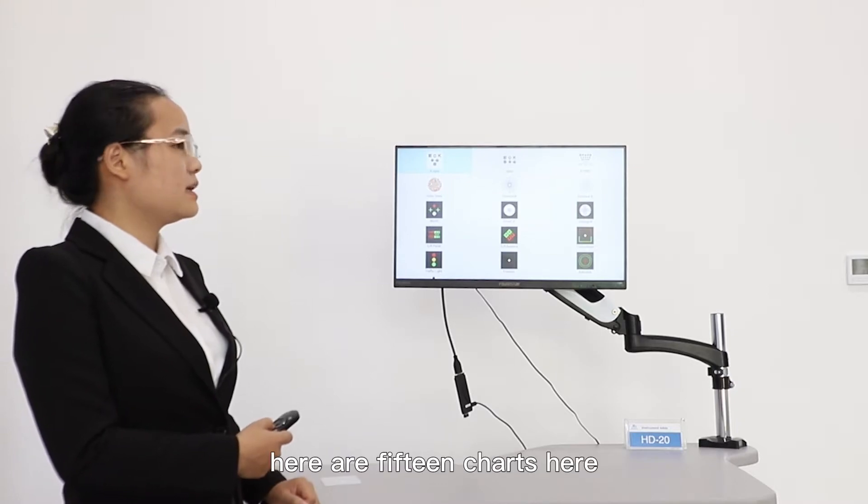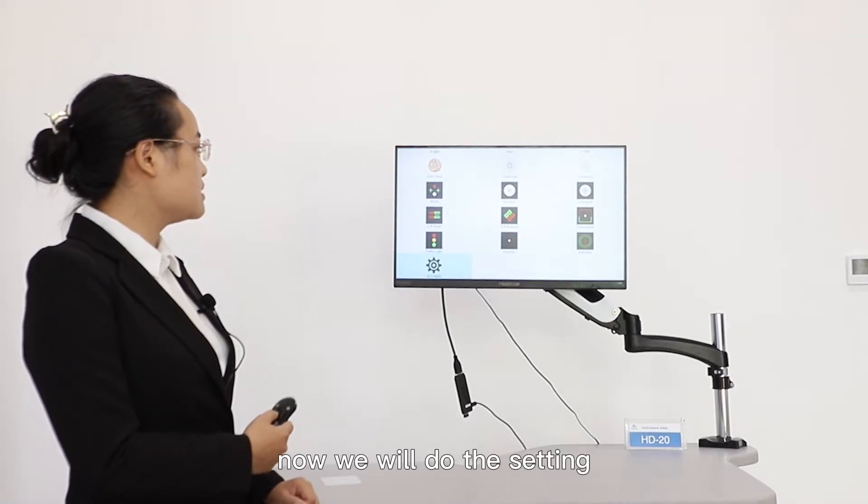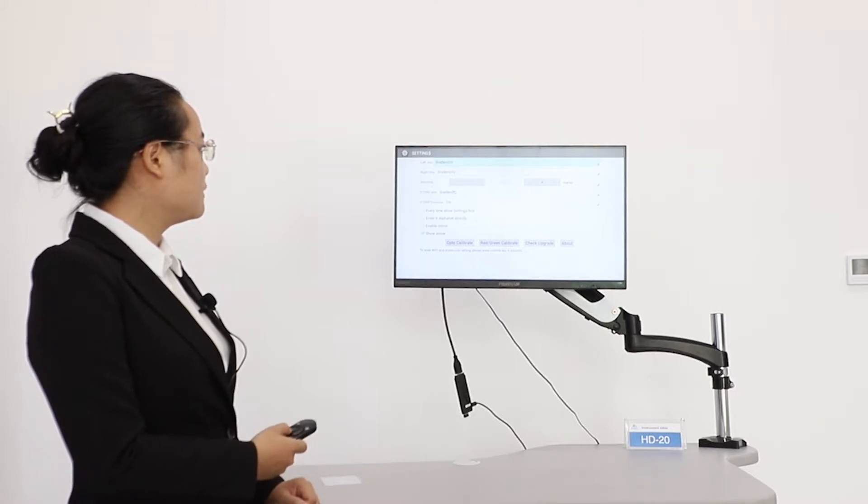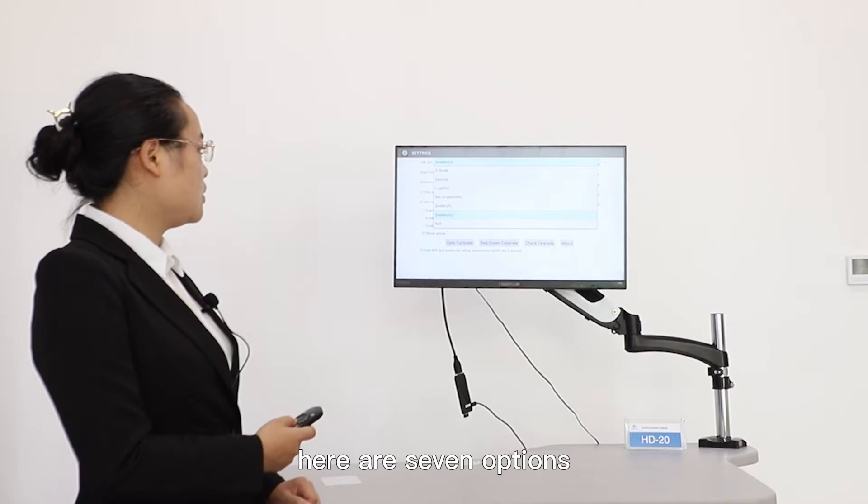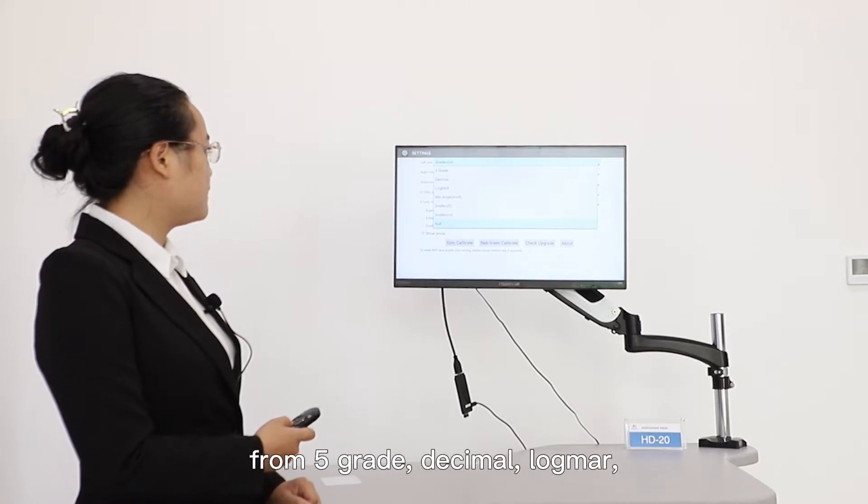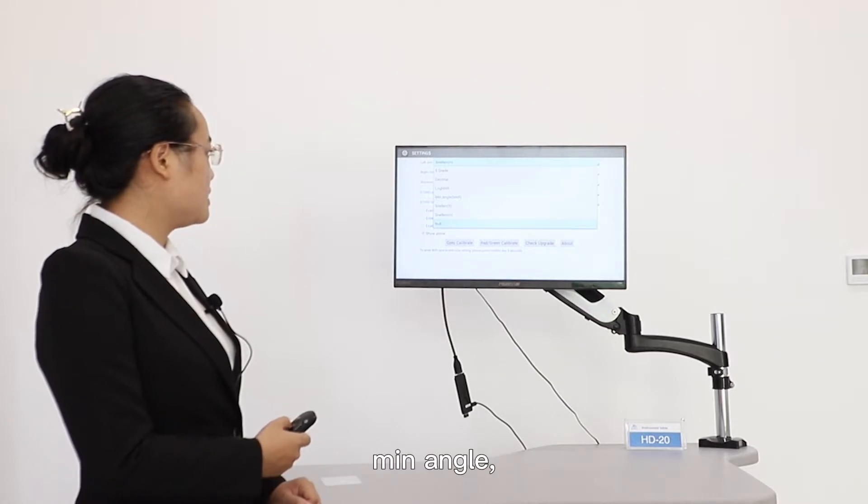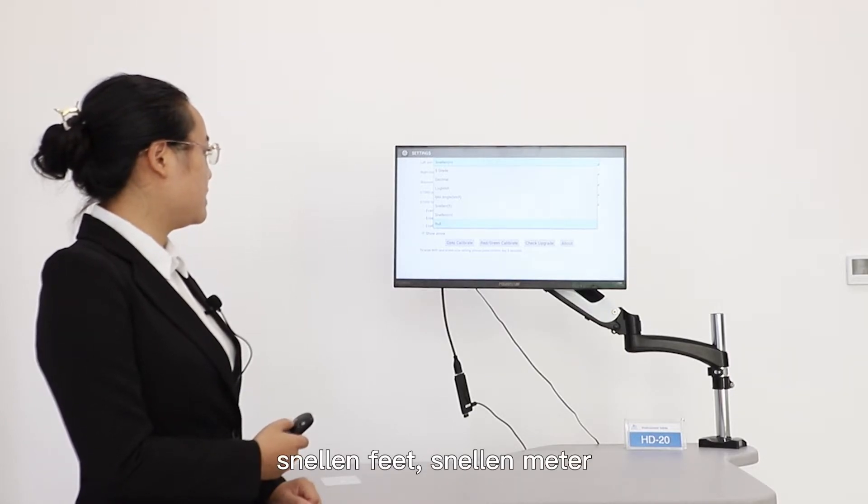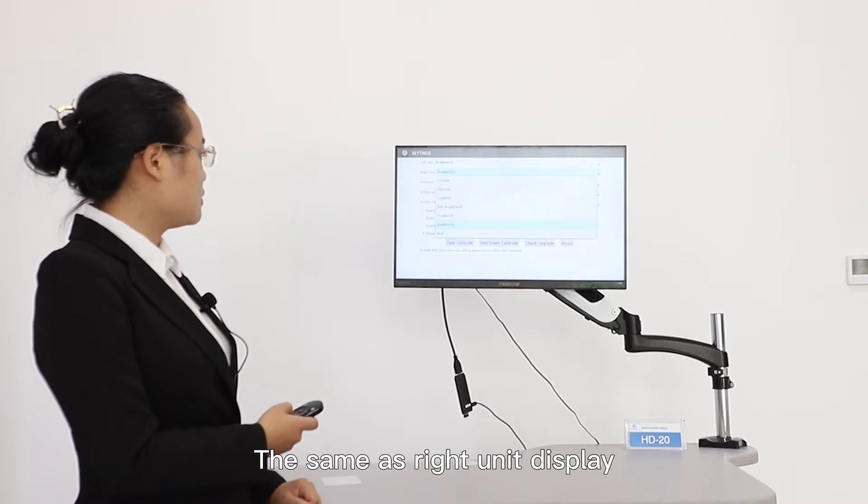As you can see, there are 15 charts here. Now we will do the settings. For left unit display, here are seven options: five grade, decimal, logMAR, main angle, Snellen feet, Snellen meters. It's the same as right unit display.